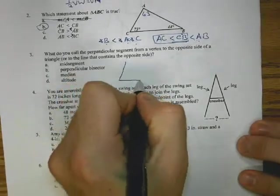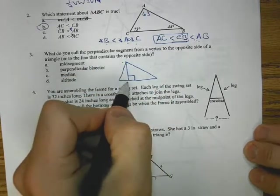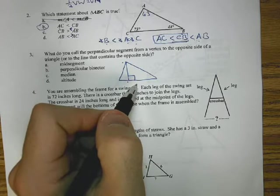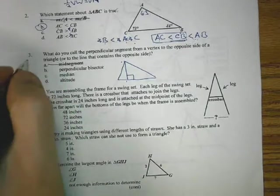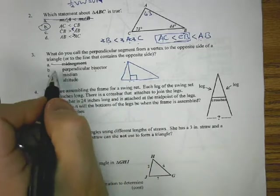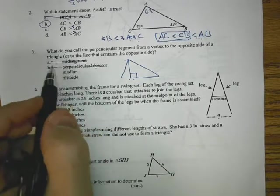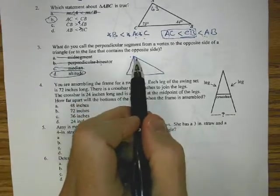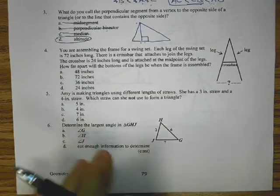Third one, what do you call a perpendicular segment from a vertex to the opposite side of a triangle? So it's perpendicular from the vertex to the opposite side. A mid-segment involves midpoints, we know nothing about a midpoint here. A perpendicular bisector, we have the perpendicular, but it would also be a bisector. A median is from the midpoint to a vertex. It leaves D, the altitude. That is the definition of an altitude.